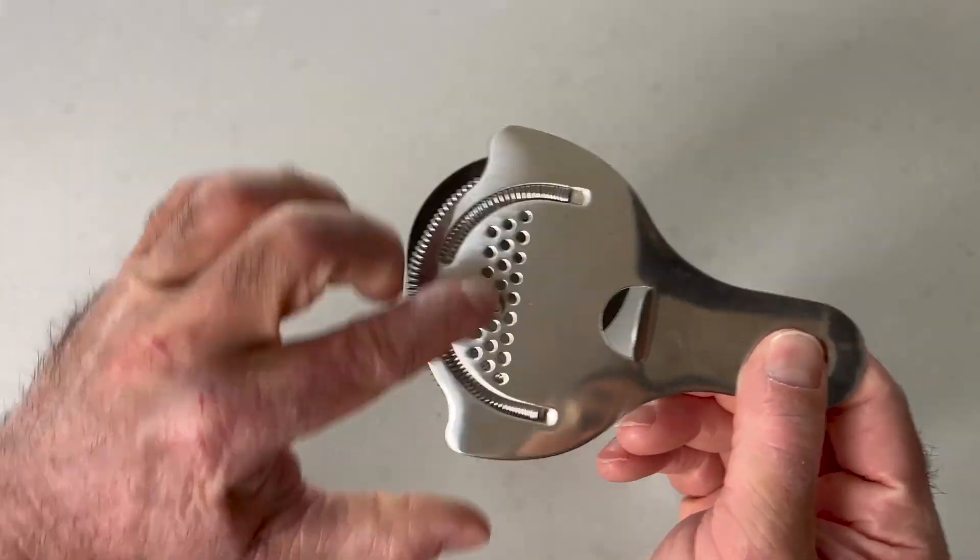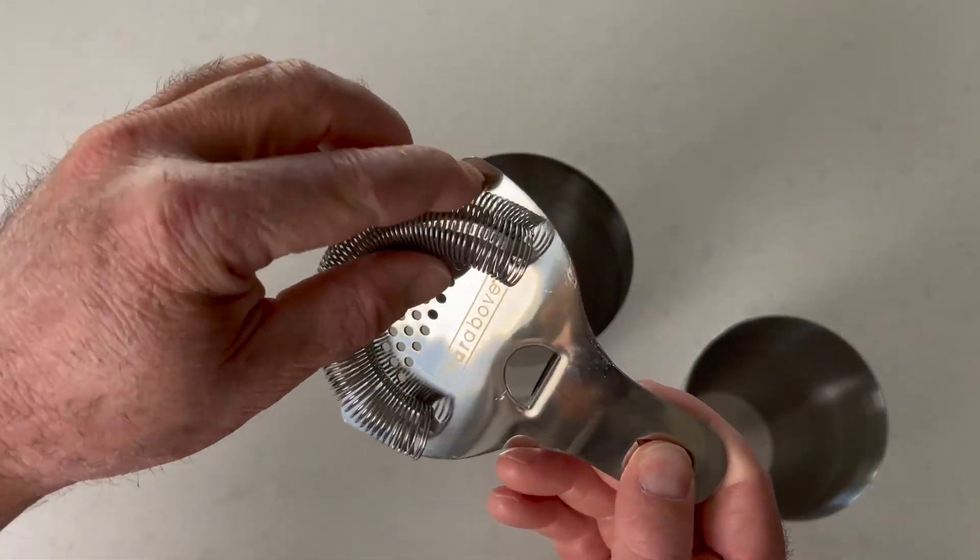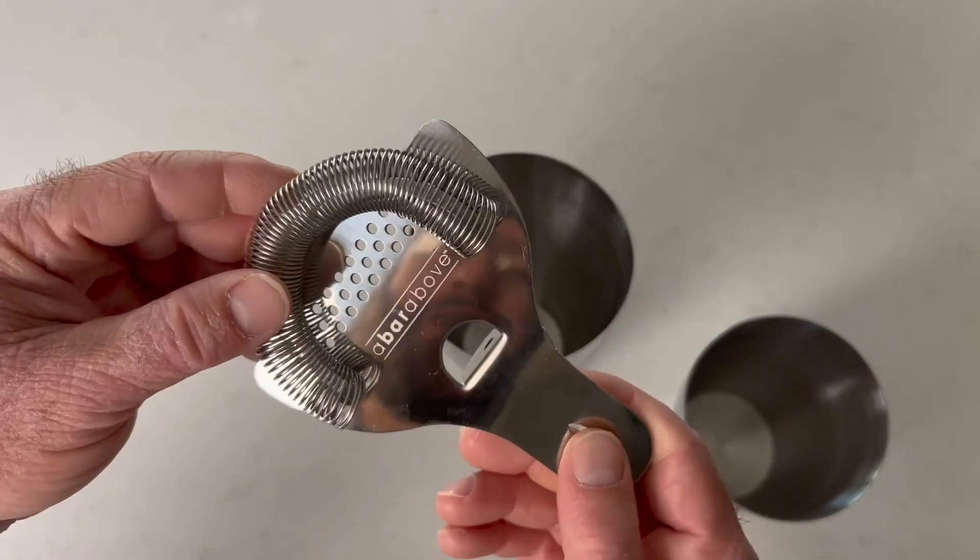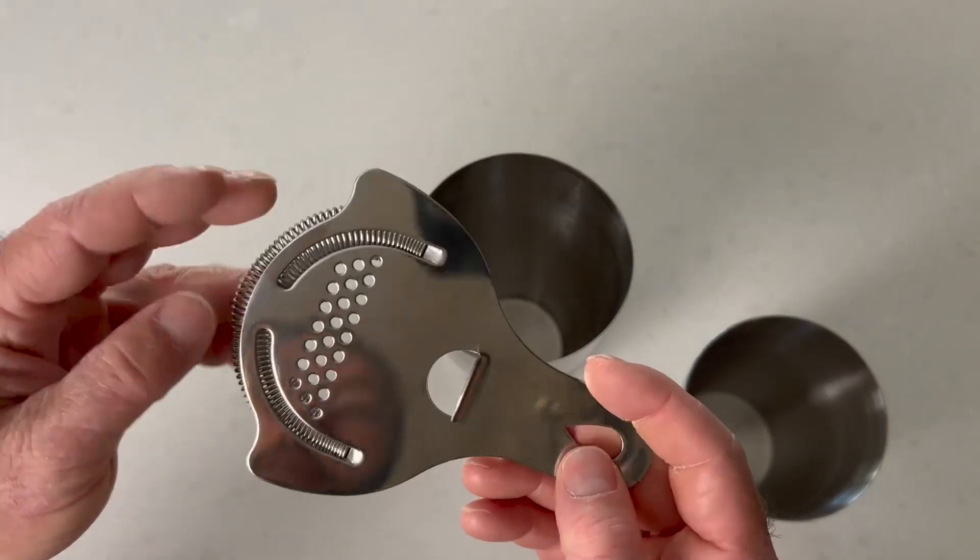It has the strainer up at the top with strainer holes here and a nice tightly coiled spring around the outside, perfect for keeping back ice and bits of anything you may not want in your drink.